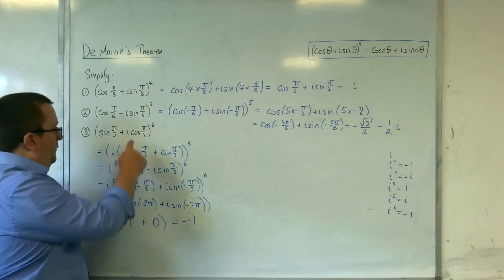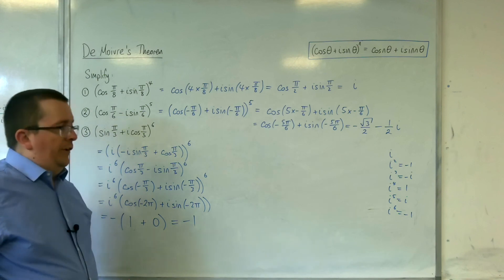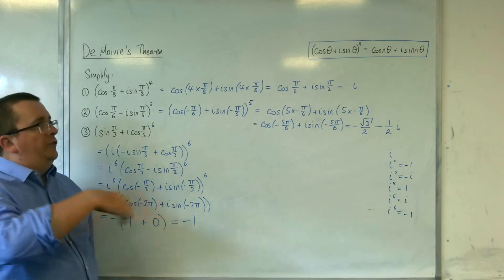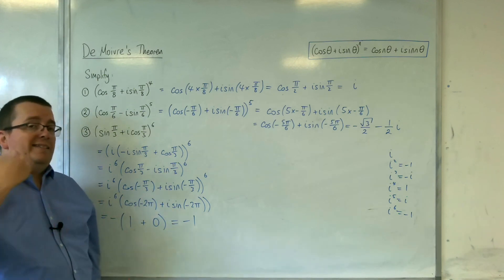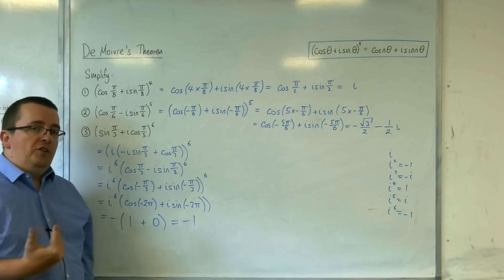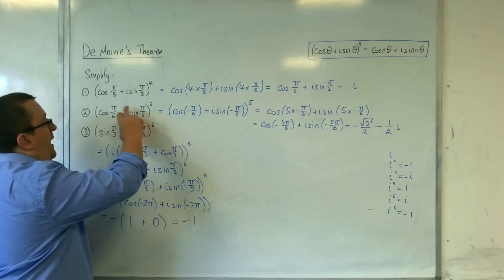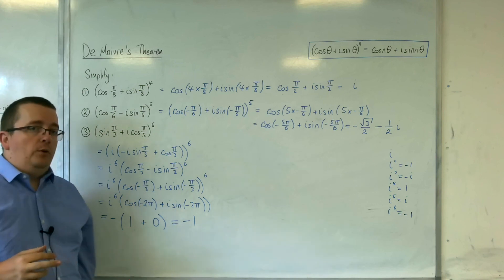So that is minus 1. So what we're using here is De Moivre's theorem, but you've got to get it set up in the correct way in order for you to use it. So you've got to be careful with the questions that you're given to check that they're in the correct format before you can proceed.